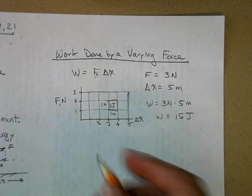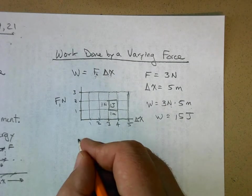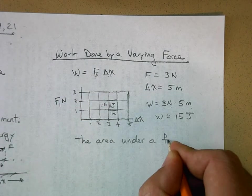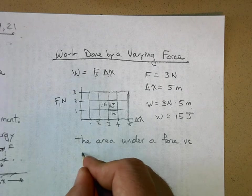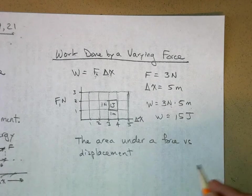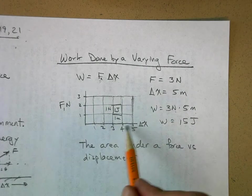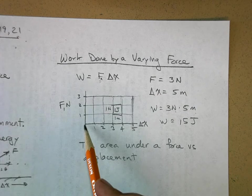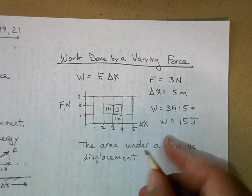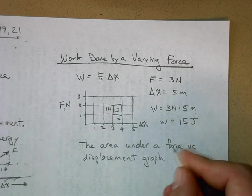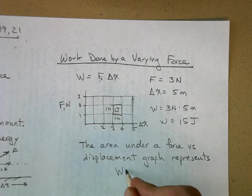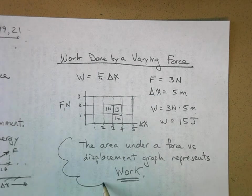So we can say that the area under a force versus displacement graph, or force versus position, represents work. The width of that is a displacement. Even if you start at the origin, it's still a displacement of five meters. The area under a force versus displacement graph represents work. This is a big idea.